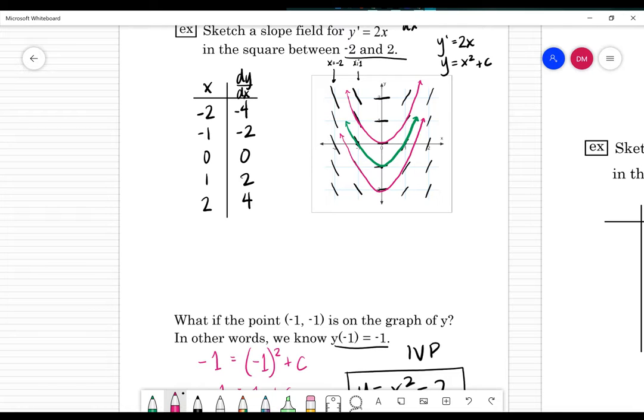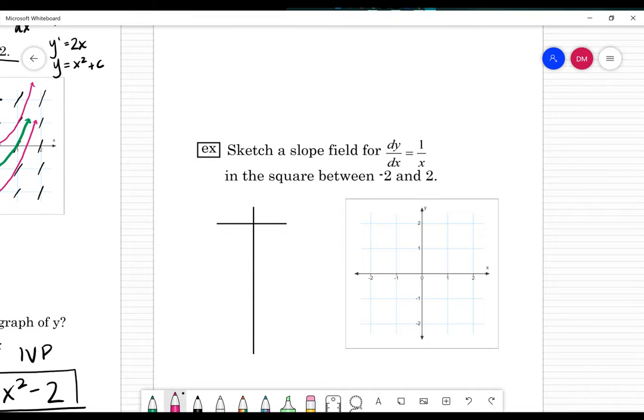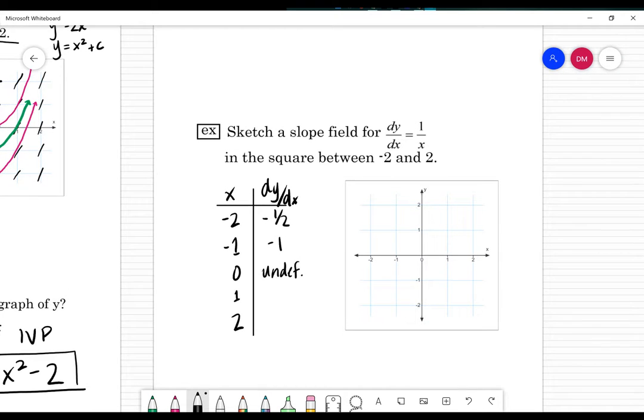Sketch a slope field for dy/dx equals one over x in the square between negative two and positive two, just like the last one. I'm going to pick x values between negative two and positive two. dy/dx is equal to one divided by x, so if I need to divide one by x: negative one half, negative one, one divided by zero is undefined, and then we get one and positive one half.